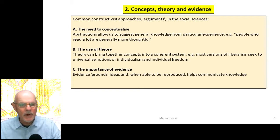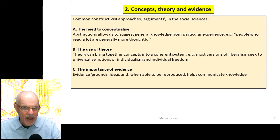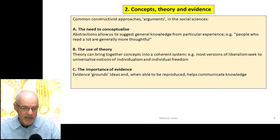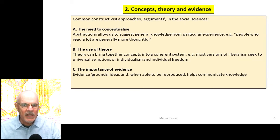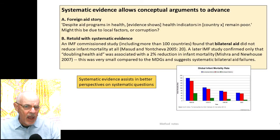Most versions of liberalism try to universalize notions of individualism and individual freedom, for example. In the constructivist approach, evidence alongside conceptualization is important. Evidence grounds ideas and, when it can be reproduced, helps communicate knowledge — if someone else can test our ideas by an experiment and get the same results, it tends to confirm the knowledge we're conveying. In political economy and the social sciences, it is necessary to conceptualize and try to extract useful general knowledge. Systematic evidence allows our conceptual arguments to advance.